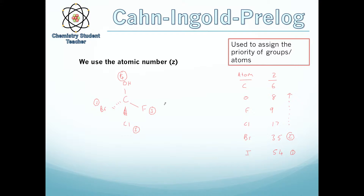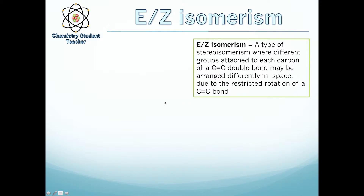I will come back to this when we have a group with different atoms where the first couple of atoms are the same on each group and then they differ — that's slightly more difficult. But first, let's move on to E and Z isomers. E and Z isomerism is a type of stereoisomerism where different groups attached to each carbon of a carbon-carbon double bond may be arranged differently in space due to the restricted rotation of a C=C bond. Just a quick reminder on alkenes: a carbon-carbon double bond consists of a sigma bond and a pi bond where they overlap to form a double bond.